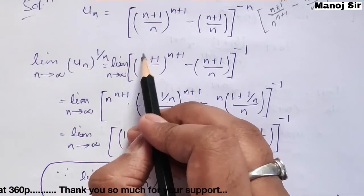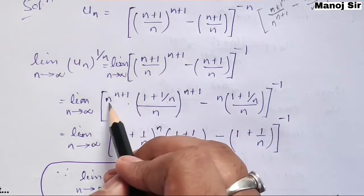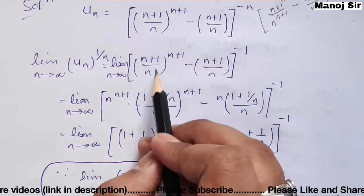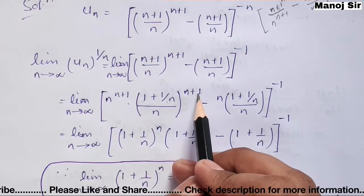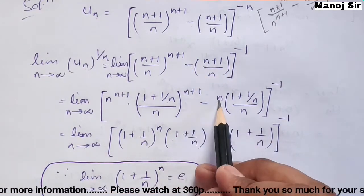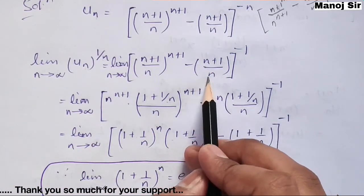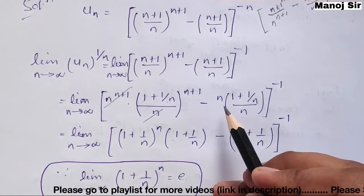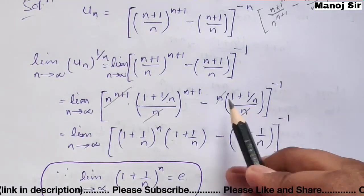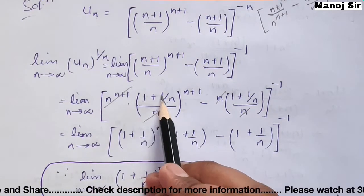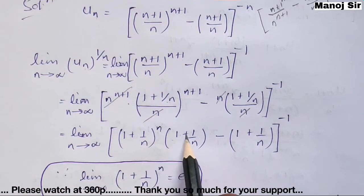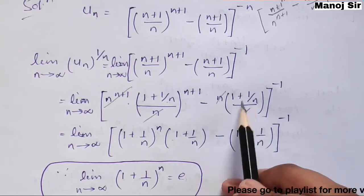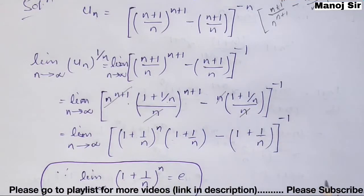We take n common from (n+1), writing it as n(1 + 1/n). This gives n^(n+1) in the numerator, which cancels with n^(n+1) in the denominator. Similarly, the n in the second term cancels. We are left with limit n tends to infinity of (1 + 1/n)^n · (1 + 1/n) · (1 + 1/n)^(−1), which simplifies to (1 + 1/n)^n times (1 + 1/n)^(−1).